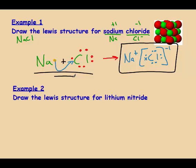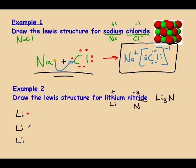So lithium nitride — we're going to do this one together. Lithium has a plus one charge, and nitride is nitrogen with a negative three charge, so the formula should be Li₃N. Looking at that formula, I need three lithiums, and each lithium starts with one valence electron. That reacts with one nitrogen with five valence electrons.